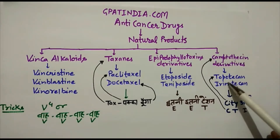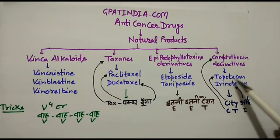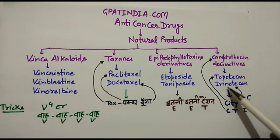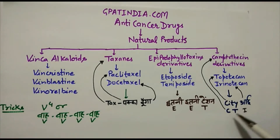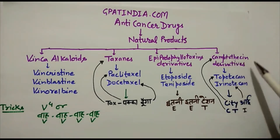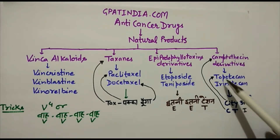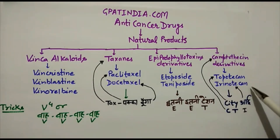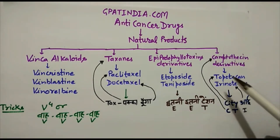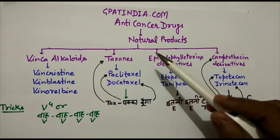Then we have camptothecin derivatives, which includes two drugs: topotecan and irinotecan. Using the shortcut 'CTI' — 'C' is for camptothecin, 'T' is for topotecan, and 'I' is for irinotecan. This completes the anti-cancer drug classification of natural products.